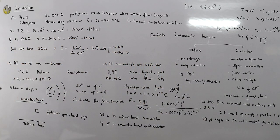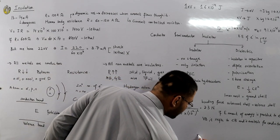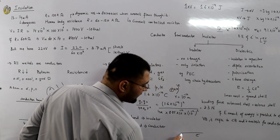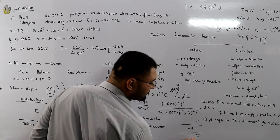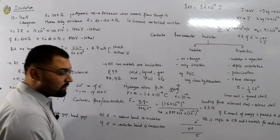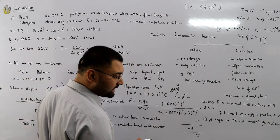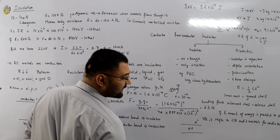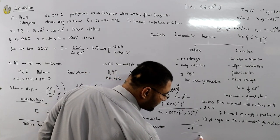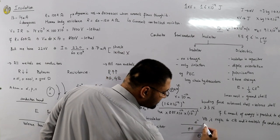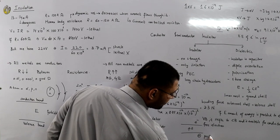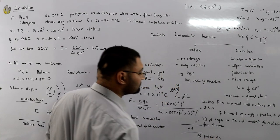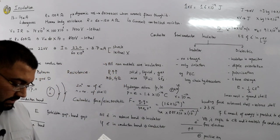So if I have an electron in the valence band and I provide E amount of energy shifting it to the conduction band, I now have a free electron in the conduction band. The vacancy left behind in the valence band is a positive ion. So I have a free electron in the conduction band and a positive ion in the valence band.